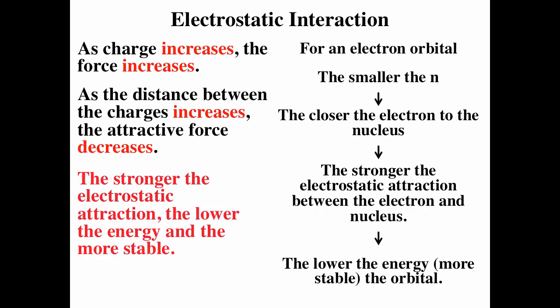For electron orbitals, each orbital has a unique set of three quantum numbers: n, l, and m sub l. n is the principal quantum number and denotes size. The smaller the n, the smaller the orbital, meaning the closer the electron density is to the nucleus, the stronger the electrostatic attraction between electron and nucleus, and the lower the energy of the orbital. That's why for all atoms, the 1s orbital is the lowest energy and most stable — it's the closest to the nucleus.